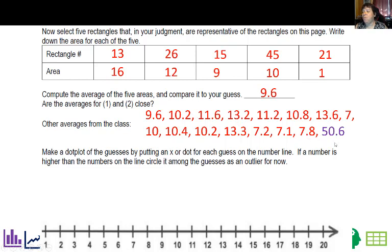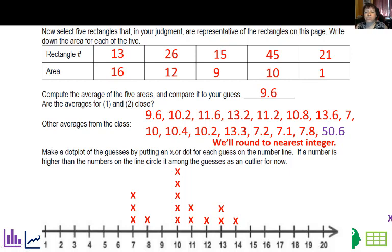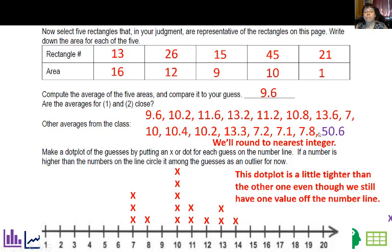So when I average all of these, I got 9.6. So I put down 9.6 with my guesses. I had them each pick out five rectangles and then average their areas. So this time we only have one number that goes off the scale. We had a range from seven to 14 plus this outlier at 50, 51. If I compare this dot plot when we use judgment, we do see that it's a little tighter than the other one.